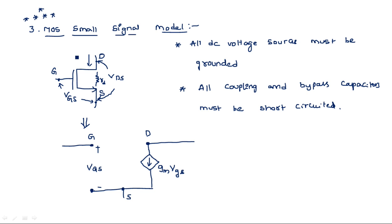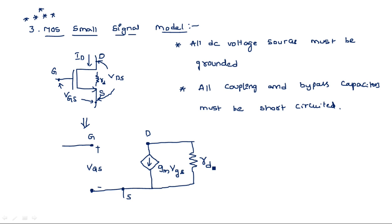The dependent source value depends on Gm·VGS. The current flowing into the drain terminal ID equals Gm·VGS, where Gm is the transconductance - output current divided by input voltage. So IDS is the current flowing in the output terminal from drain to source as Gm·VGS. The internal resistance Rd is shown between drain and source - you can call it Rd or R0, both are same. This represents VDS, the drain-to-source voltage.